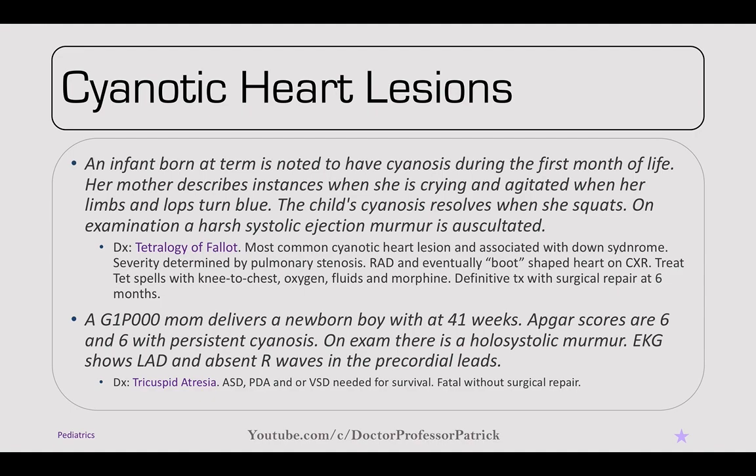A newborn at 41 weeks has Apgar scores of 6 and 6 with persistent cyanosis. On exam, there's a holosystolic murmur. EKG shows left axis deviation and absent R waves in the precordial leads — this is tricuspid atresia. It's associated with ASD, PDA, and VSD for survival, and is fatal without proper surgical repair.